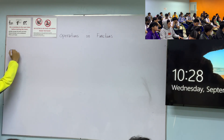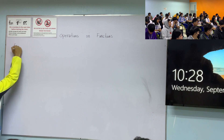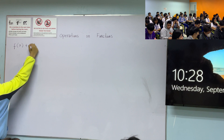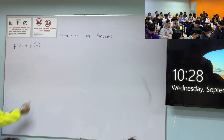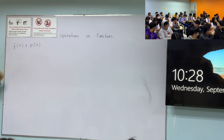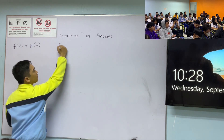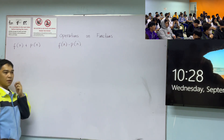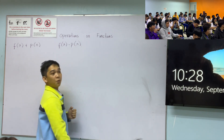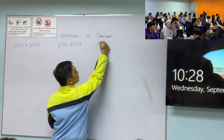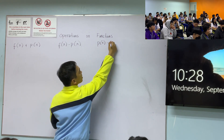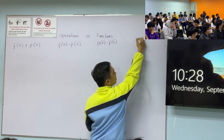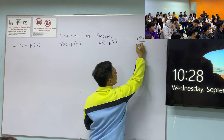So let's start with addition. If we have the function f(x) plus another function, that's addition. We also have subtraction — f(x) minus p(x). For multiplication, we're going to multiply p(x) times f(x). And lastly, for division, p(x) over f(x).